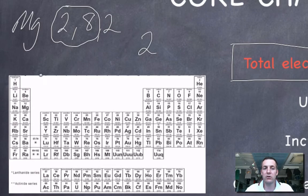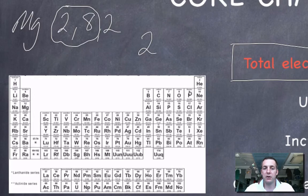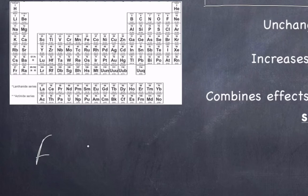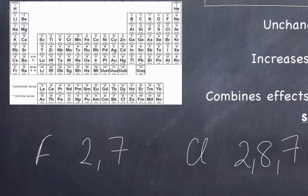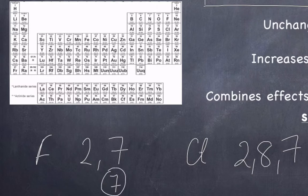That number shouldn't change as we move down group two. If we look at group seven and compare fluorine and chlorine — fluorine is 2,7 and chlorine is 2,8,7 — the number of inner shell electrons in fluorine is two; subtract that from its total of nine and you get a core charge of seven. Do the same for chlorine: subtract 10 from its total of 17 and you're left with a core charge of seven.